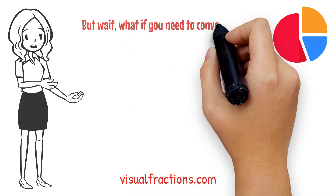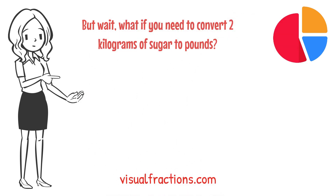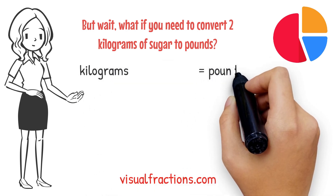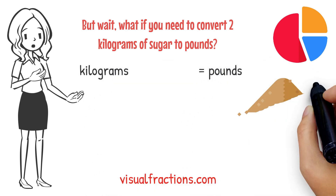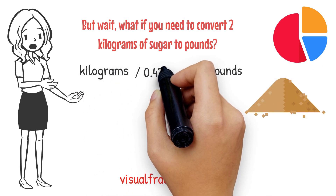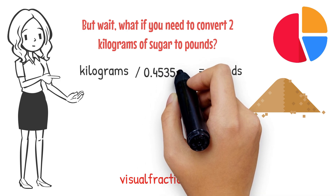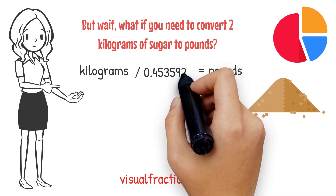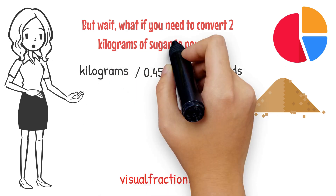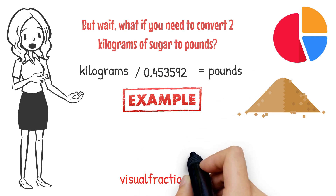But what if you need to convert two kilograms of sugar to pounds? To convert kilograms to pounds, you need to divide the number of kilograms by the conversion factor of 0.453592. Let's walk through an example of how to convert two kilograms of sugar to pounds.